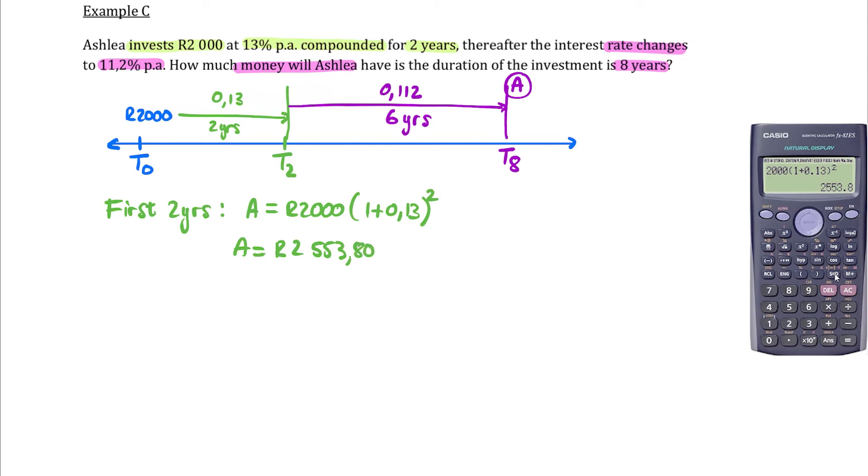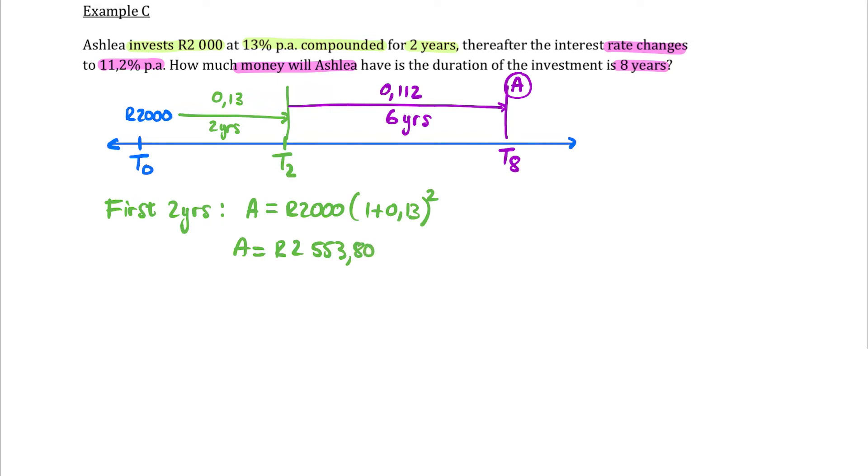Okay, we don't have to worry about lots of decimals there. So that means at this point in time, her investment is worth 2,500 Rand. This then becomes a P-value to go forward for the next one. So for the next six years, we're going to find out what is the accumulated amount. Now we use this amount. Her investment has grown to 2,500 Rand and that's our P-value.